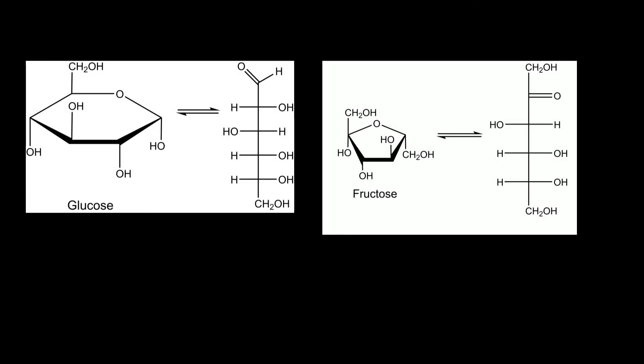The cyclic form is the result of the formation of a hemiacetal out of the keto or aldehyde group with one of the hydroxy groups. The carbon of the former aldehyde or keto group is then called an anomeric carbon atom, which is a new stereocenter.